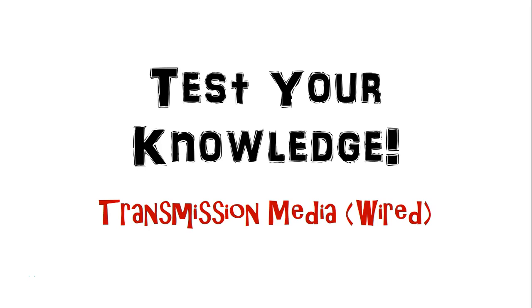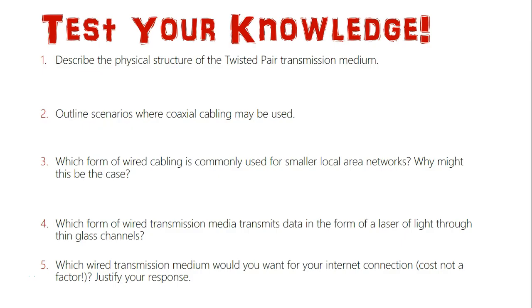Test your knowledge: transmission media — wired. The following five questions are aimed at helping you with your understanding of wired transmission media. Question one: describe the physical structure of the twisted pair transmission medium. Question two: outline scenarios where coaxial cabling may be used. Question three: which form of wired cabling is used for smaller local area networks, and why? Question four: which form of wired transmission media transmits data in the form of a laser of light through thin glass channels? Question five: which wired transmission medium would you want for your internet connection if cost is not a factor — justify your response.